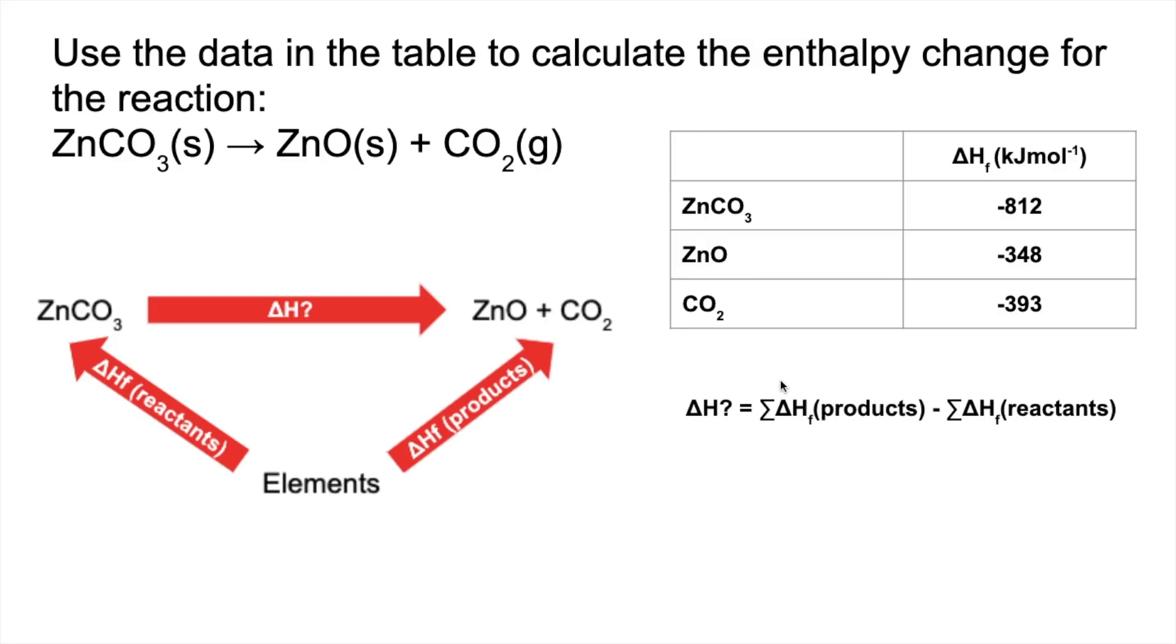So we'll just go through the calculation now. Delta H is products minus reactants. Remember that arrow is going in the wrong direction, that's why I have to subtract it. So we'll put the numbers in now, just be careful with signs. And we end up with delta H equals plus 71 kilojoules per mole.